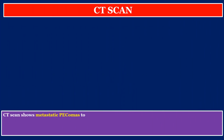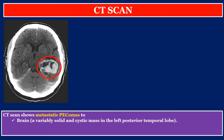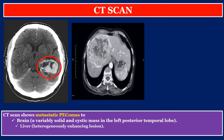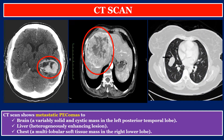CT scan findings. CT scan shows metastatic PEComas to the brain, showing a variably solid and cystic mass in the left posterior temporal lobe; liver, showing a heterogeneously enhancing mass; and chest, showing a multilobular soft tissue mass in the right lower lobe.